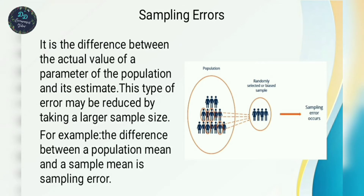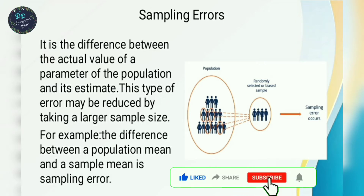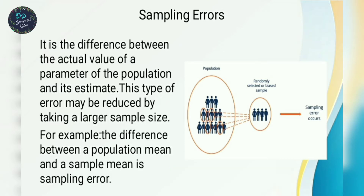This type of error may be reduced by taking a large sample size. In sampling error, we look at the actual value and the estimated value. The difference between the population mean and the sample mean is the sampling error.